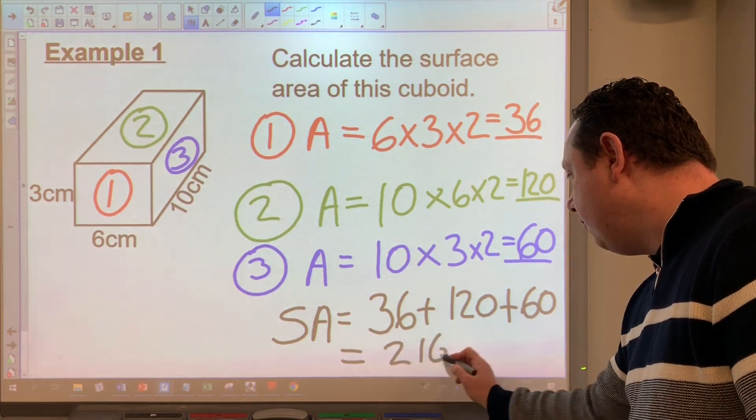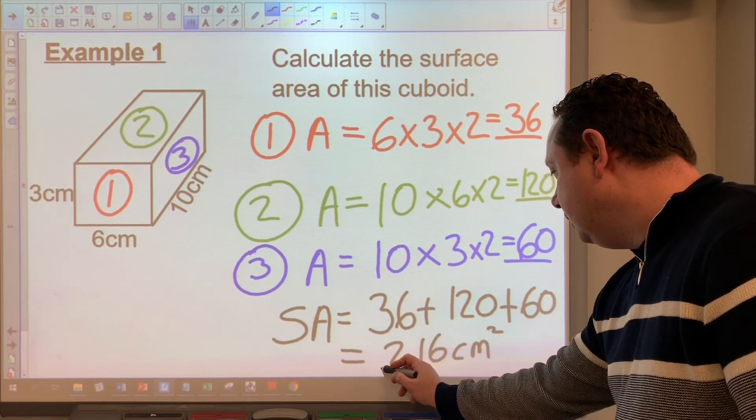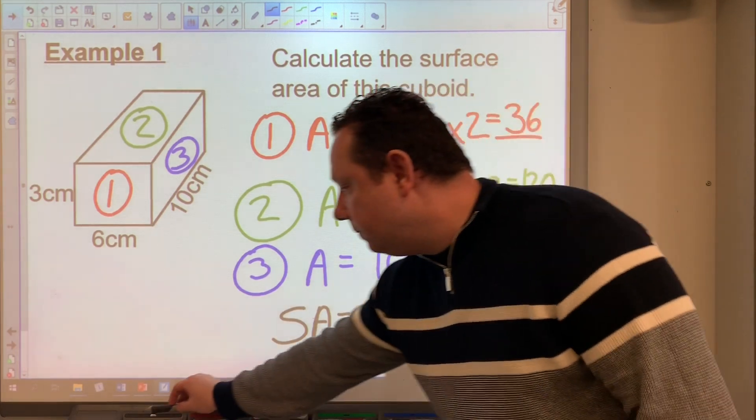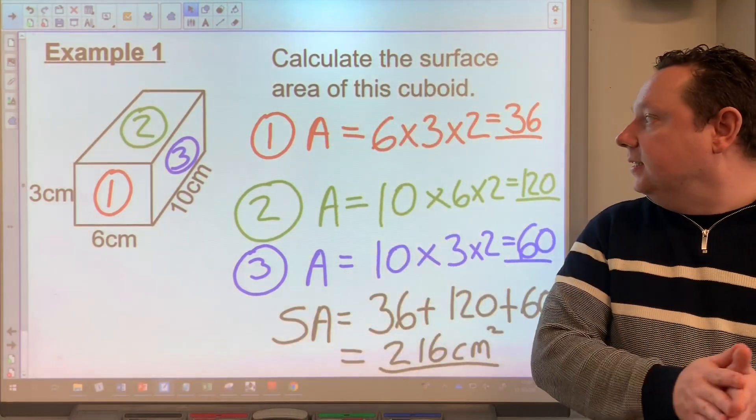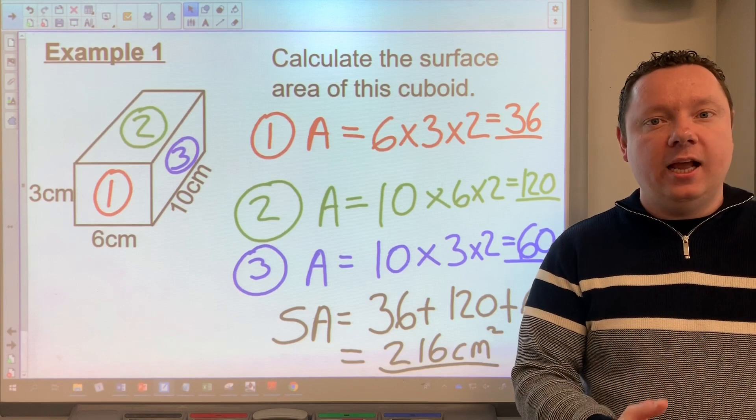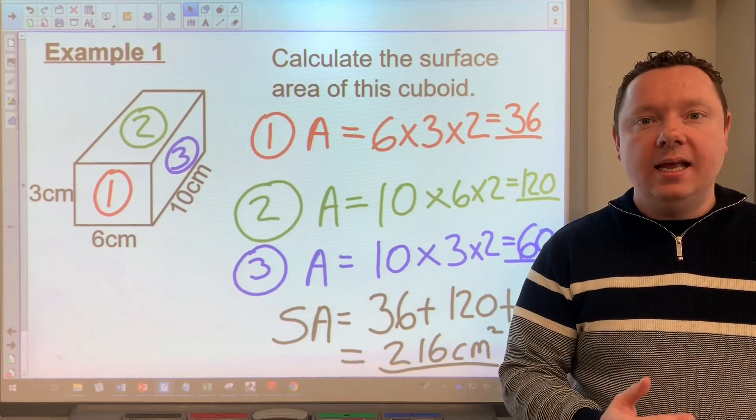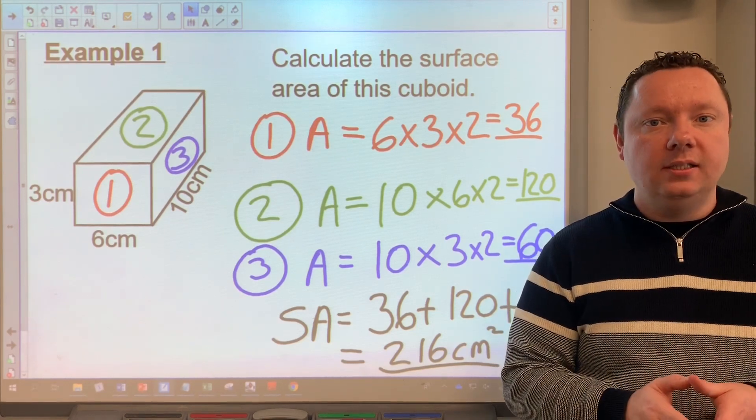It is an area worked out, so it's square units, centimeters squared. And that is a very basic and simple example, taking our time, working step by step by step to get that surface area. Let's look at another example.